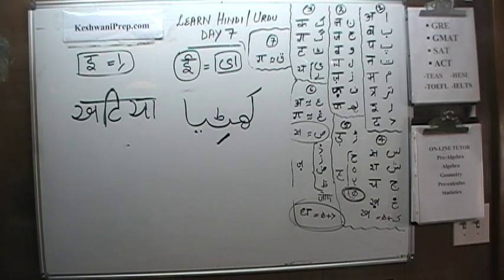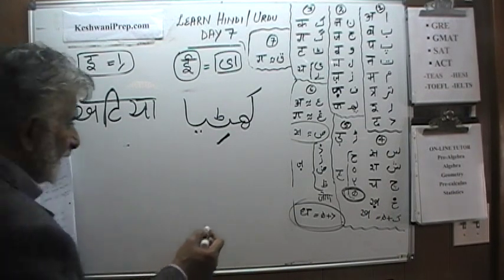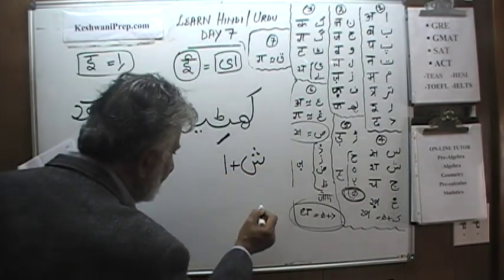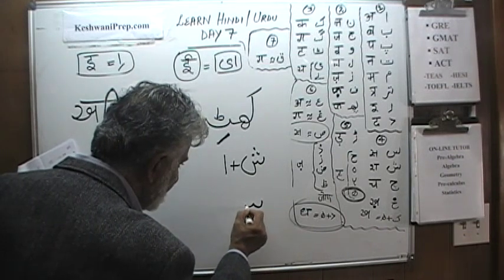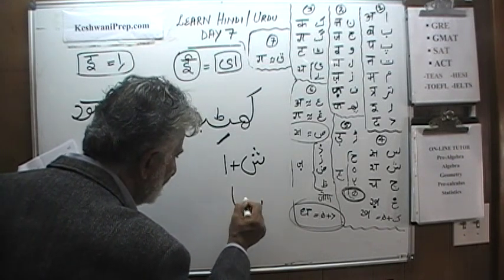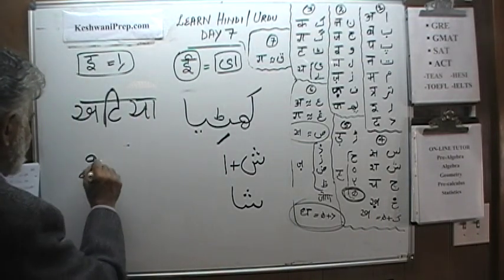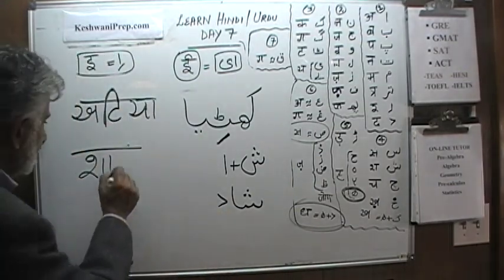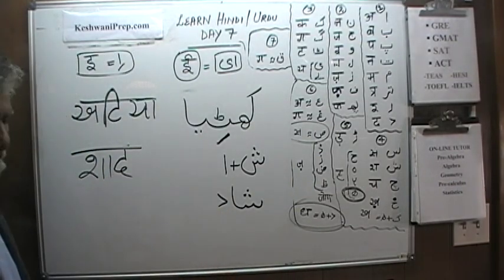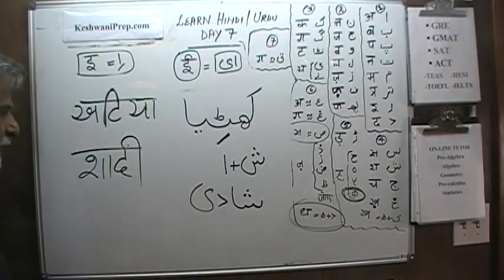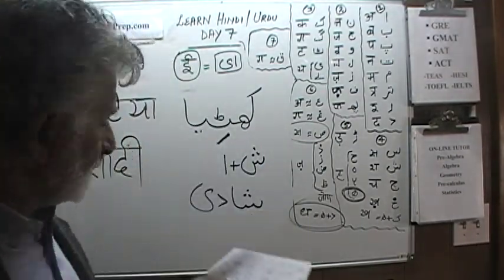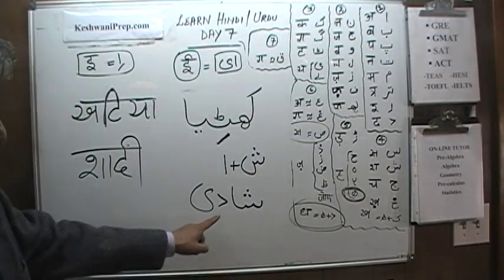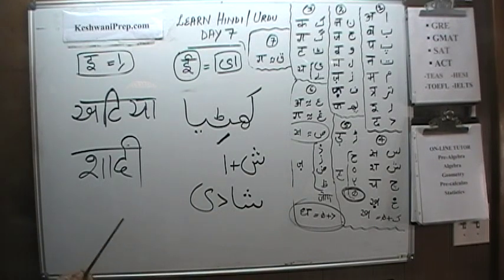The next word uses Badi Iki Matra: Sheen joining Aleph makes Sha, then Dal, then Badi Iki Matra. Dal does not join anything. The word is Shaadi — meaning wedding or marriage.